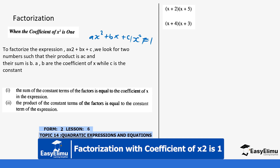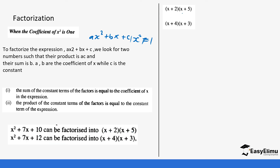For example, looking at these expressions (a + 2)(a + 5) — if we expand this we are going to get x² + 7x + 10. And if we expand (a + 2)(a + 6) it's going to be x² + 7x + 12.